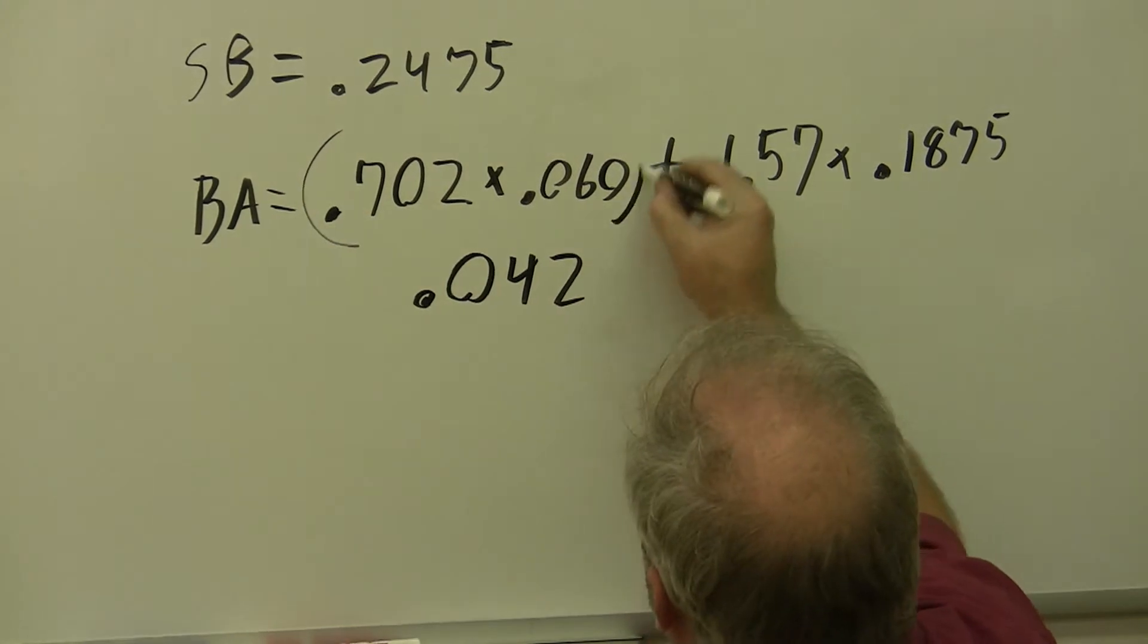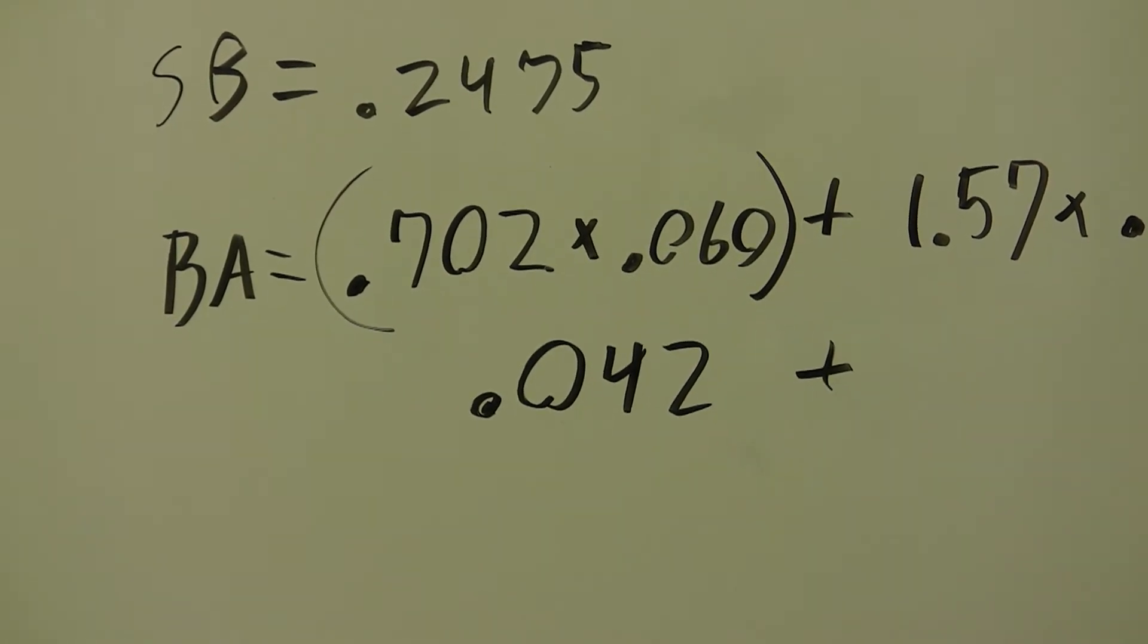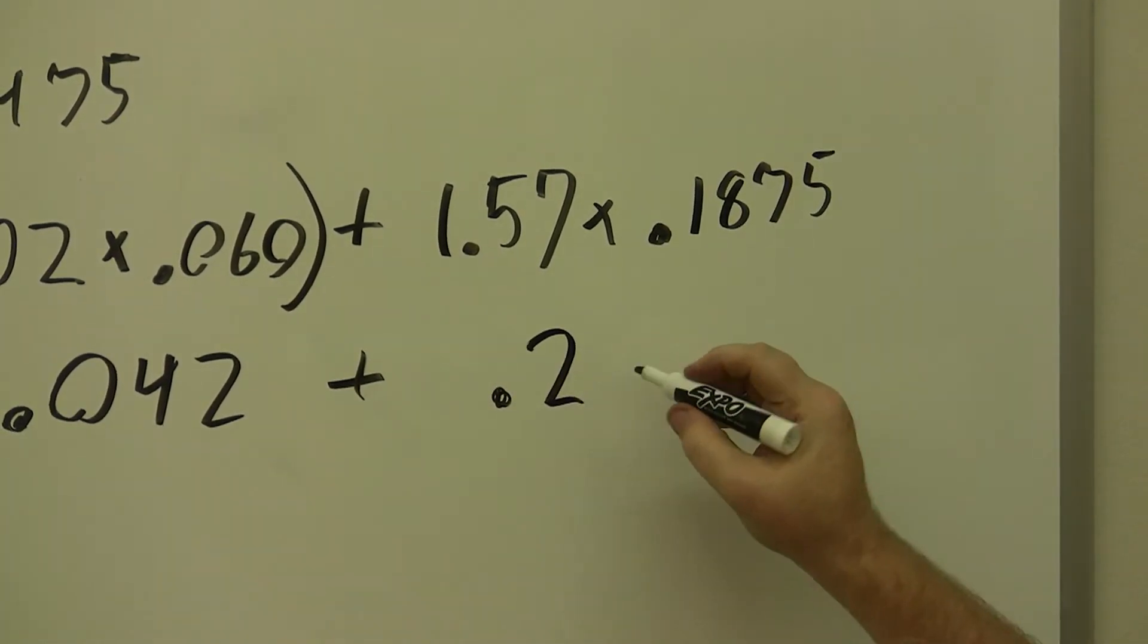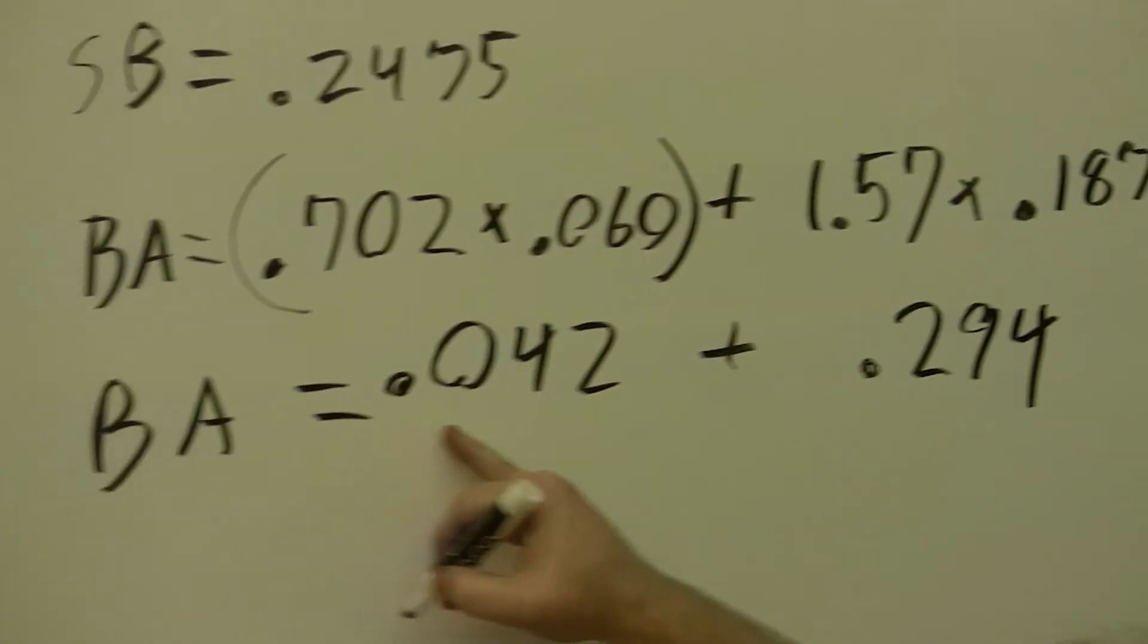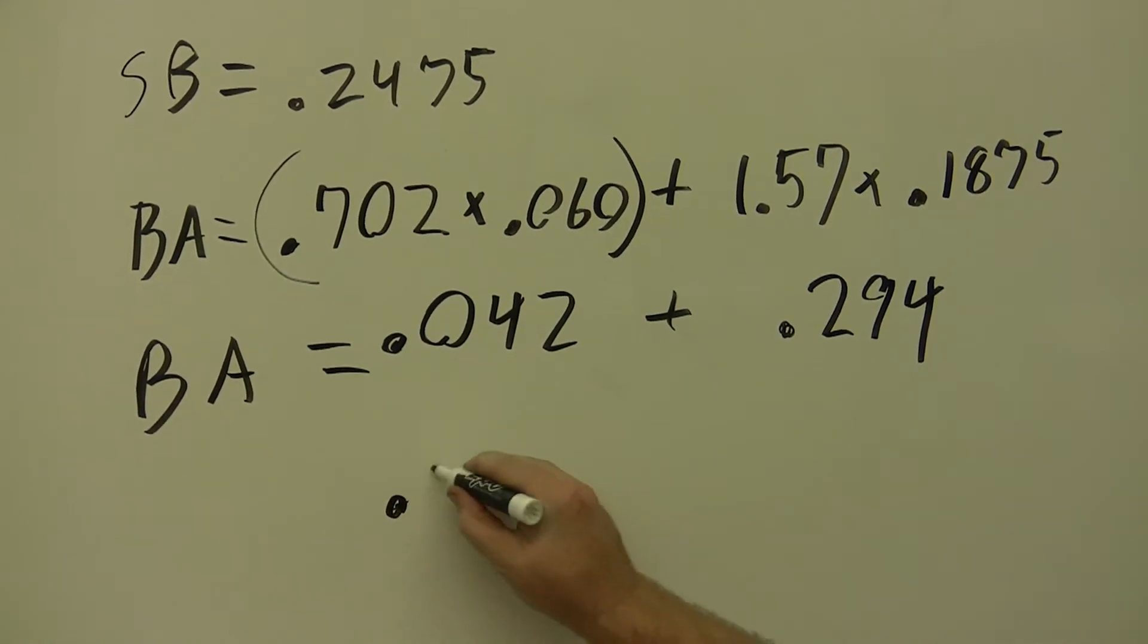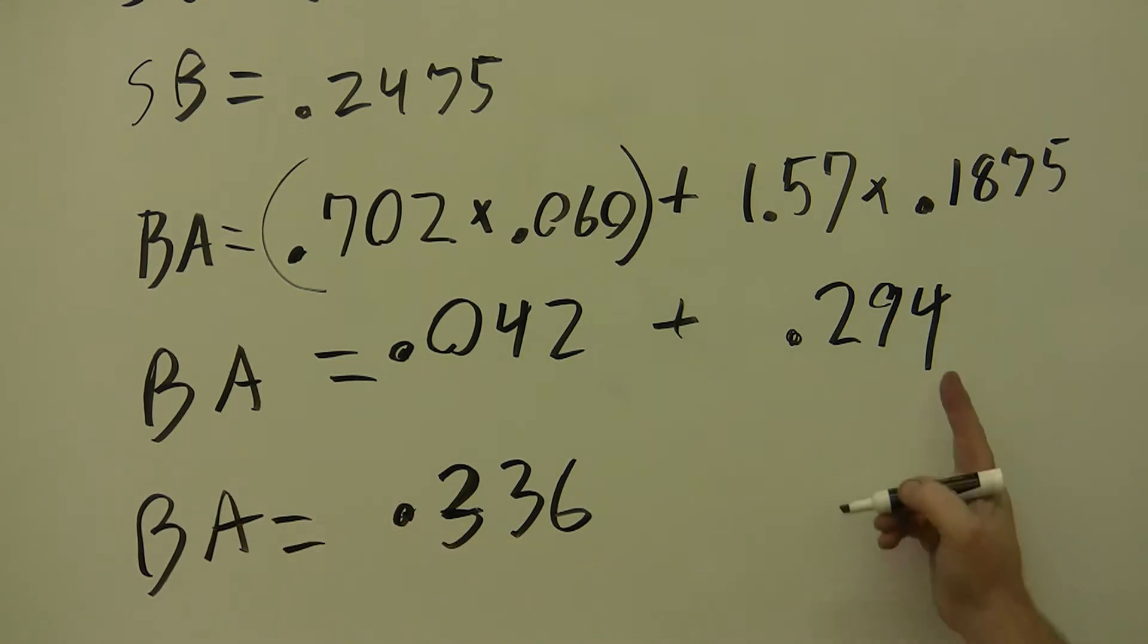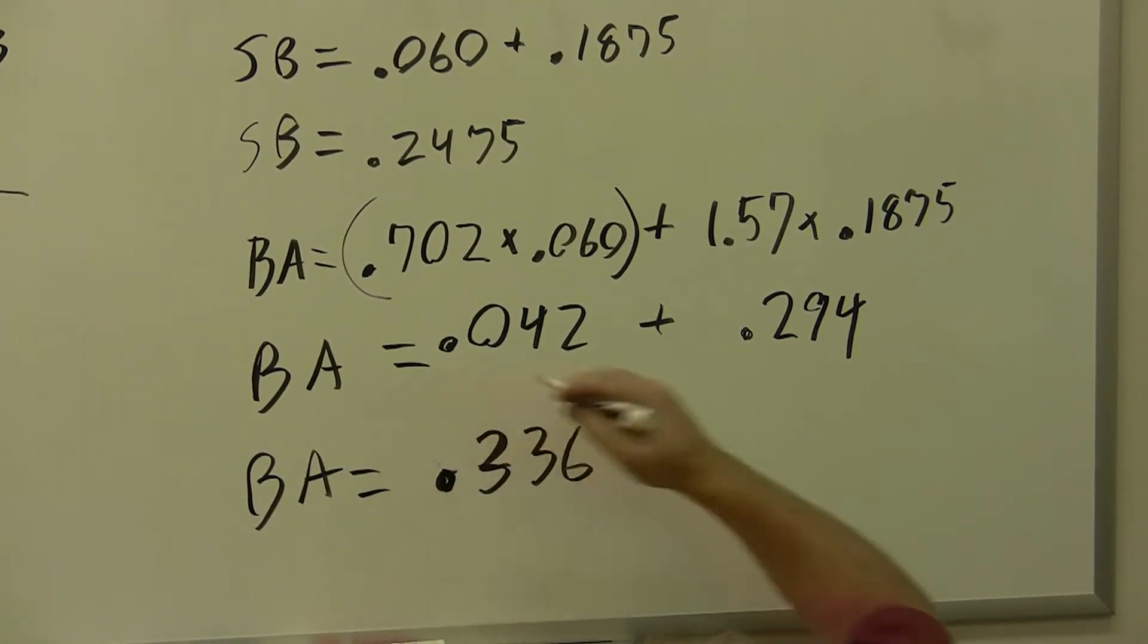That's this term right here. Okay, that becomes 0.042 plus, over here, 1.57 times 0.1875 gives us a value of 0.294. So our bend allowance is equal to 0.042 plus 0.294, and that is 0.336. Bend allowance equals, let me check my math, that's 6, that's 13, yep, 0.336, and that becomes 3. So 0.336 inches.